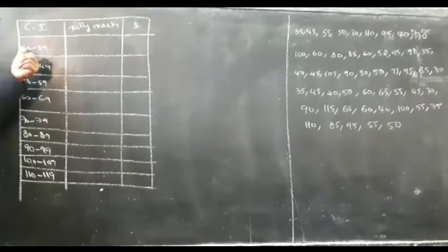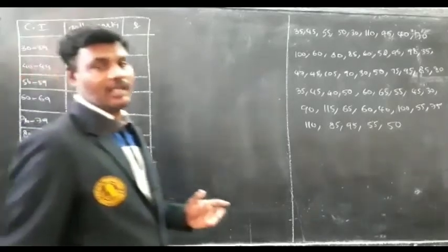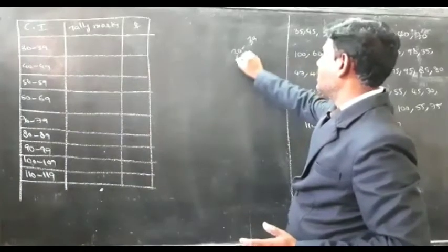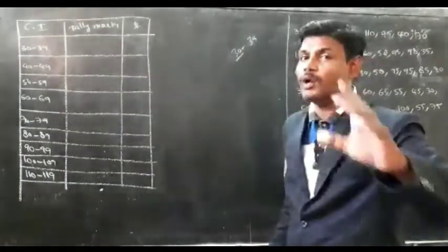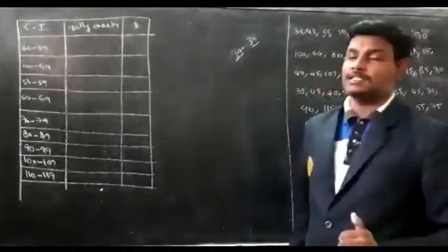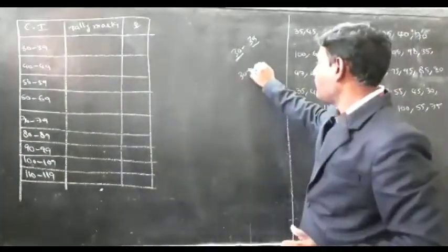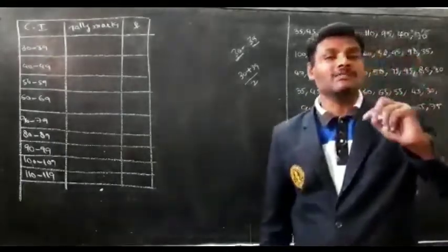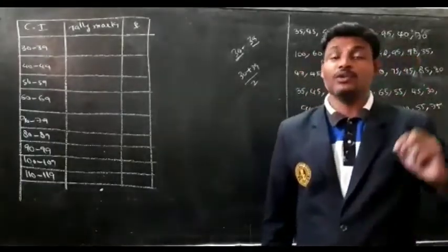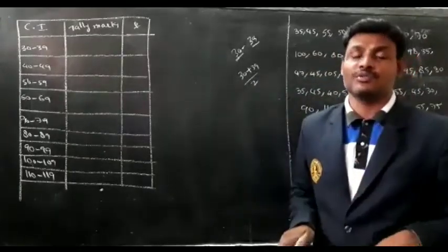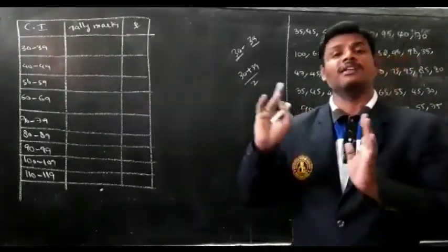The average of the lower boundary and upper boundary is called the class mid-value. To find the class mid-value, add the lower and upper boundaries and divide by 2. The class mid-value is nothing but the average of the class.